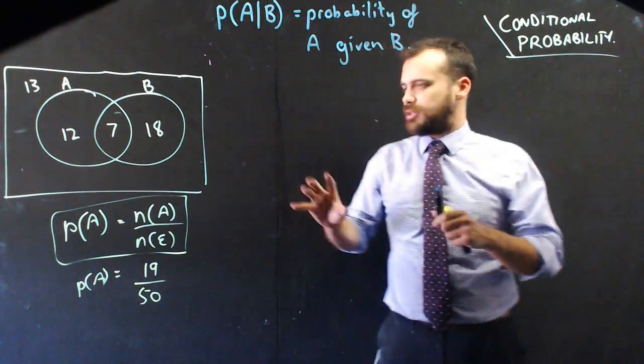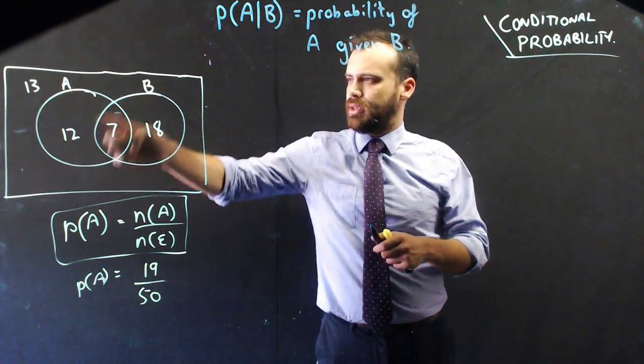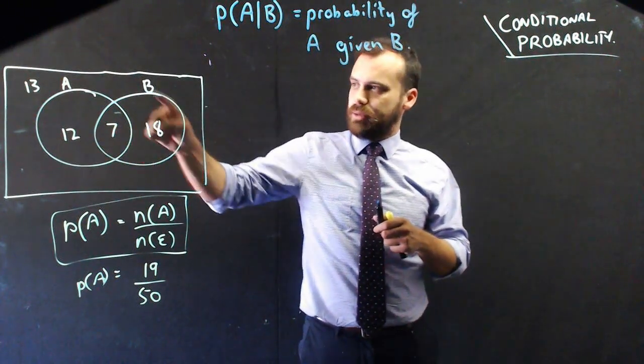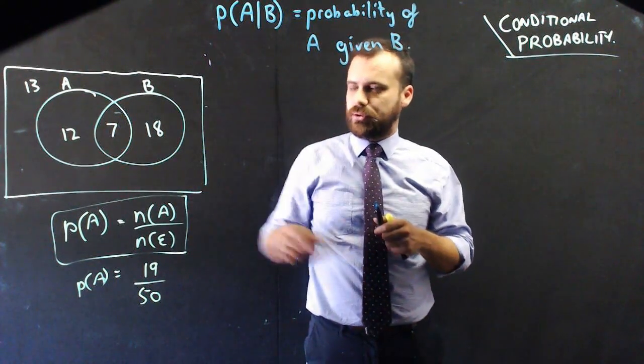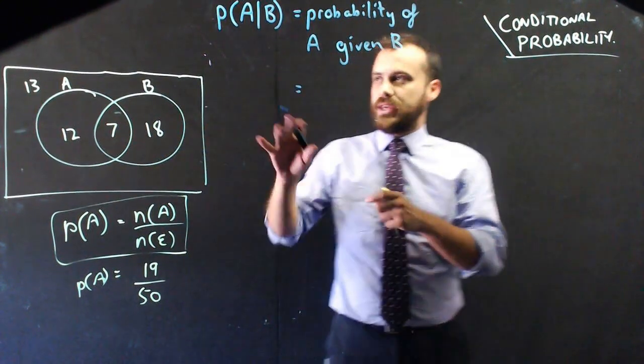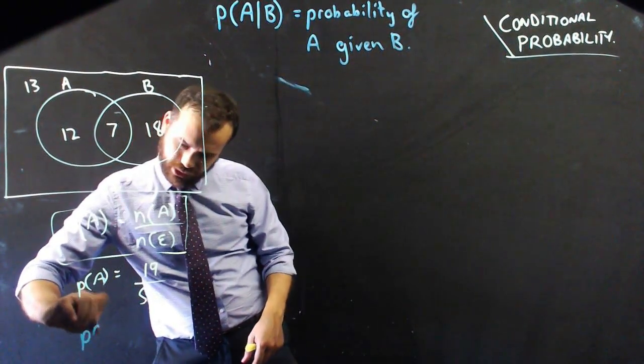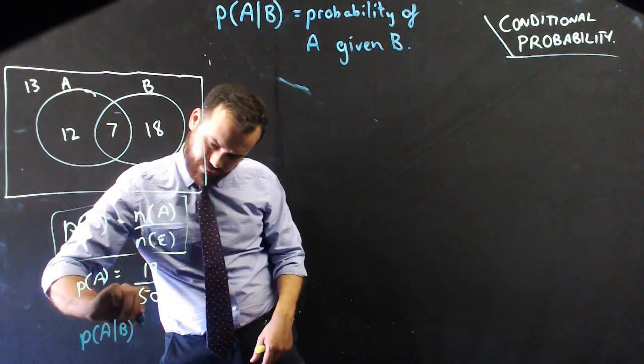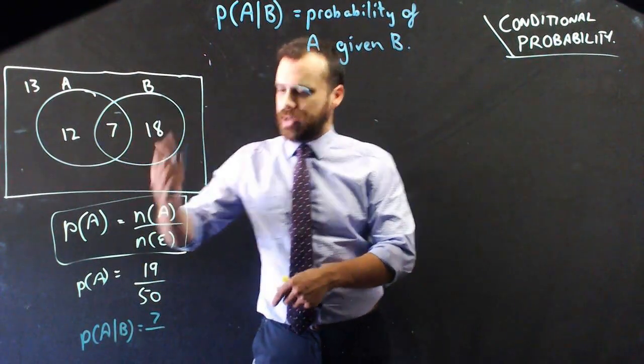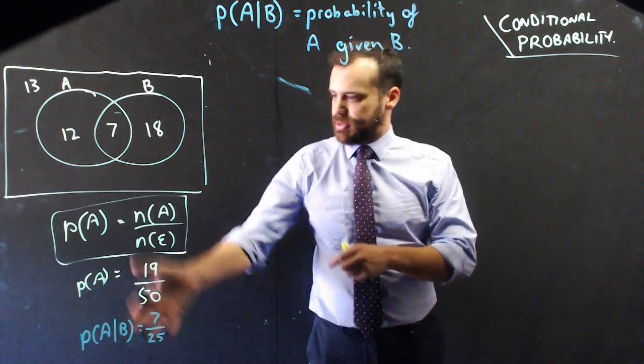So let's look at this. If we know they're in group B, they're in group B here. And if we want to find the probability that they're in group A, well, how many people are in this group but are also in group A? The answer is 7. So for this particular example, the probability of A given B is equal to 7 over the total amount of people in group B, which is 25. That's for this specific example, but we need a formula.